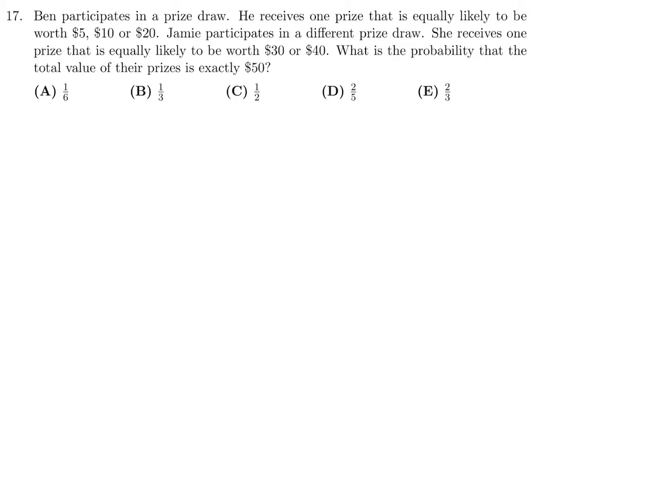Ben participates in a prize draw. He receives one prize that is equally likely to be worth 5, 10, or 20. Jamie participates in different prize draws. She receives one prize that is equally likely to be 30 or 40. What is the probability that the total value of the prizes is exactly 50?